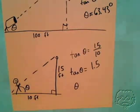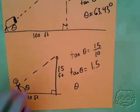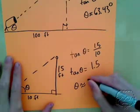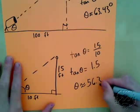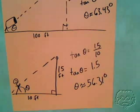So, I would put 1.5 into the arctangent function on my calculator, and I would figure out that that angle of elevation is about equal to 56.31 degrees.